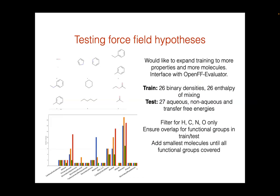We had a publication a year ago based on heats of vaporization. We now have a new interface with Simon's Open Forcefield Evaluator code, where we'd like to expand the training and test sets and train against more properties. We want Josh to put together a new training set containing 26 binary densities, 26 enthalpies, and a similar-sized test set. This can be trained in a couple of days, so we can very rapidly make force field hypotheses, train them up, test them, throw them away, or bring them through for others to extend.